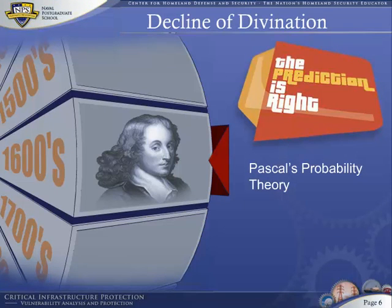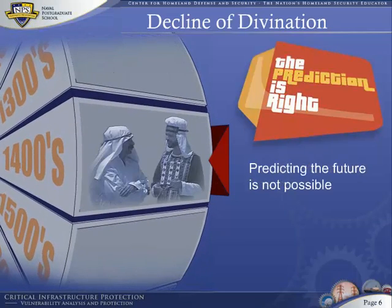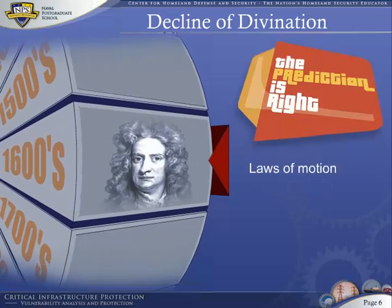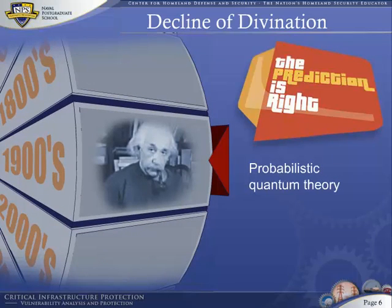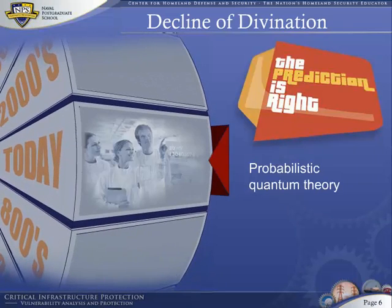Prior to Pascal's quantification of chance as an a priori probability, humans thought it was impossible to predict the future. Isaac Newton's laws of motion were too rigid to explain observations, but had a good run until Einstein discovered the probabilistic quantum world. Even Einstein was ambivalent and considered his discovery a big mistake. After all, why would God play dice? As it turns out, Einstein's big mistake is the basis of most of science today, including the best explanation for how computers work and how the universe was formed.